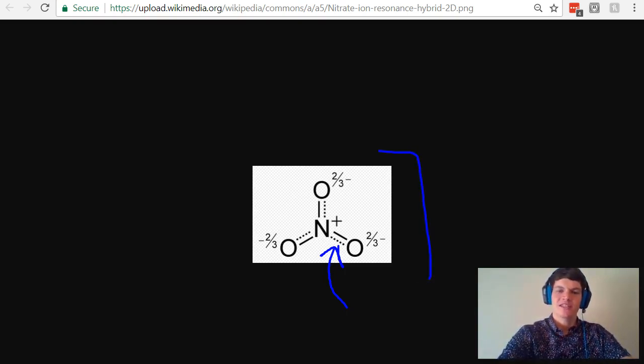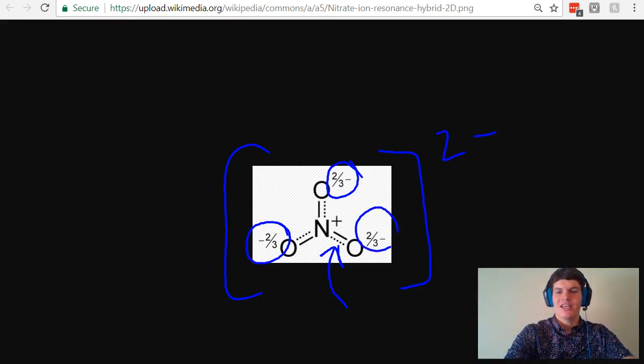Also notice that normally nitrate has an overall charge of 2-. And we represent this by saying that that 2- charge is spread evenly throughout the molecule by saying that there's a 2/3 charge on this oxygen, same with this oxygen, and this oxygen.